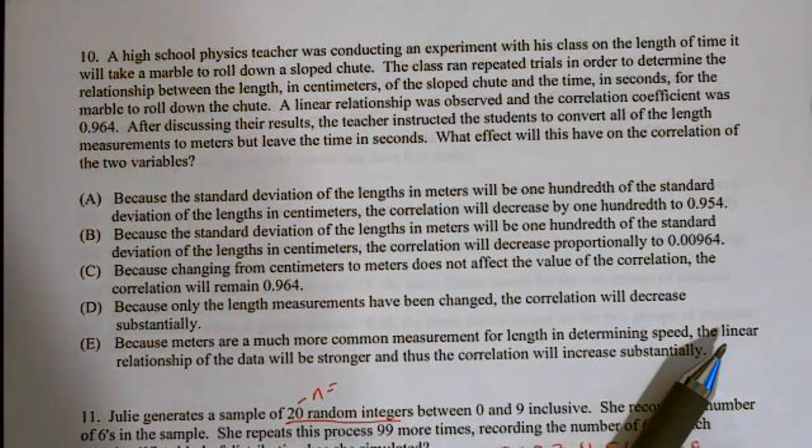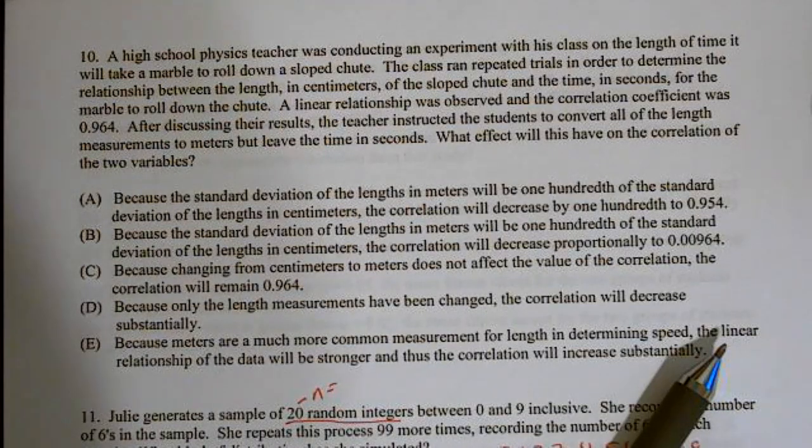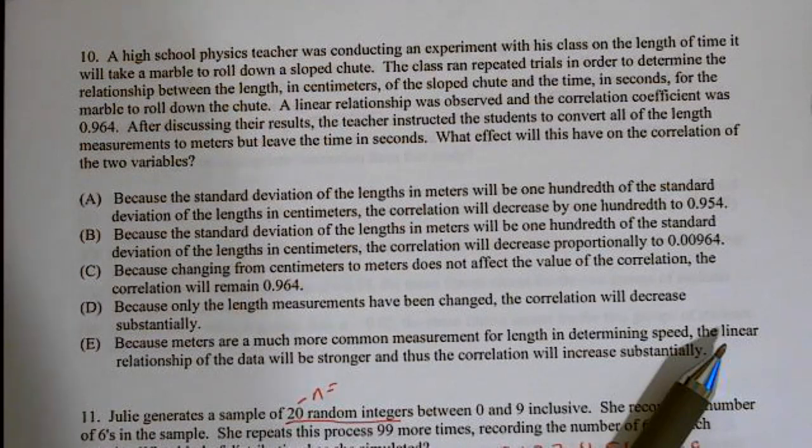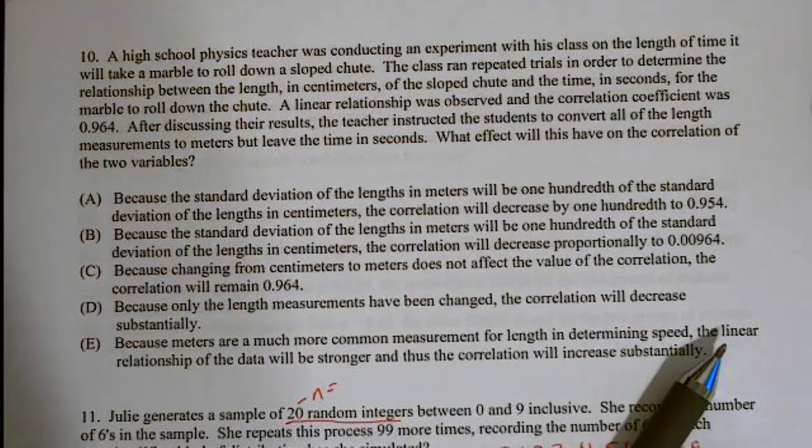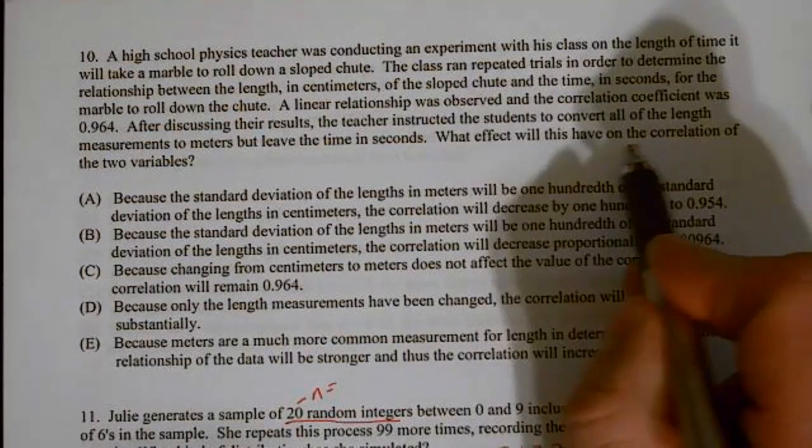A high school physics teacher was conducting an experiment with his class on the length of time it will take a marble to roll down a slope chute. The class ran repeated trials to determine the relationship between the lengths in centimeters of the slope chute and the time in seconds for the marble to roll down the chute. A linear relationship was observed, and the correlation coefficient was 0.964. After discussing the results, the teacher instructed the students to convert all of the length measurements to meters but leave the time in seconds.